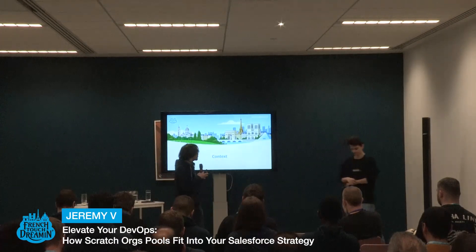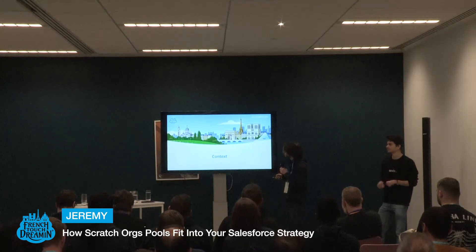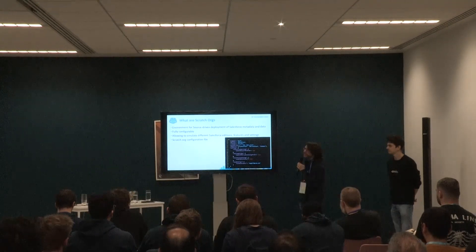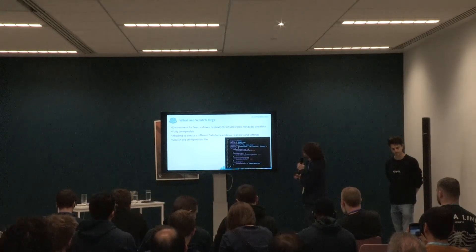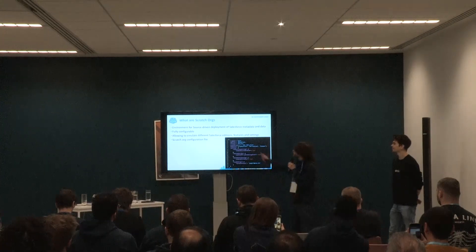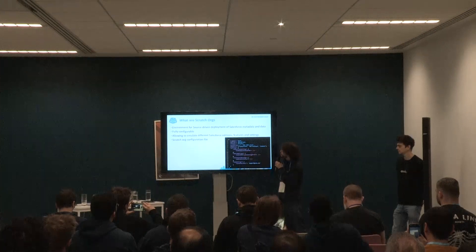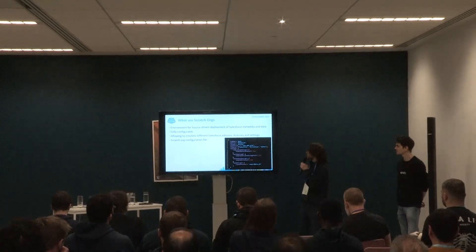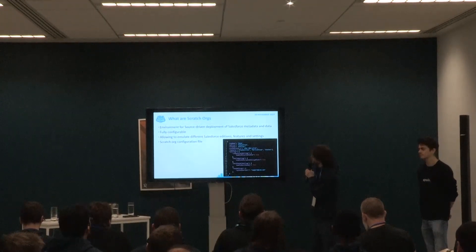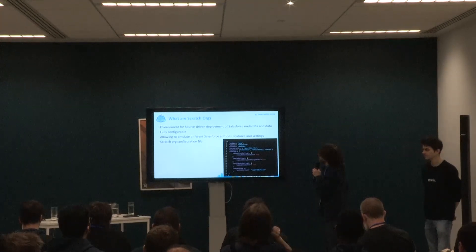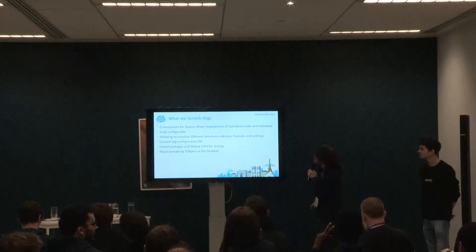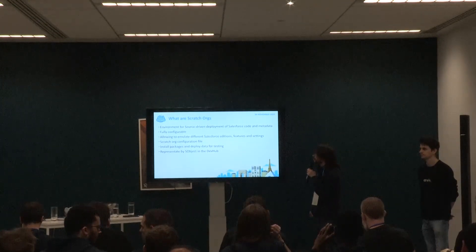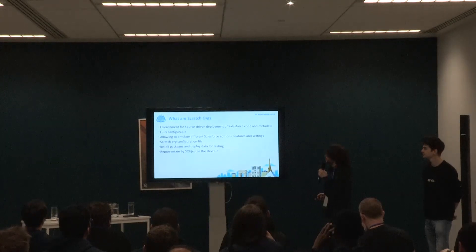Thank you Nathan. Let's start with a bit of context to see what Scratch Orgs are. Scratch Orgs are environments for source-driven deployments of Salesforce metadata and data. They are fully configurable — you can use a scratch org configuration file to edit the edition, use preview features, and add features like Community or Service Cloud, and settings like Omni-Channel. It allows you to emulate different Salesforce editions. You can also install packages and deploy data for testing. It's represented by an S-object in DevHub, so you can manage it more easily.